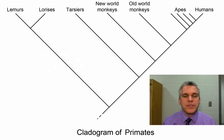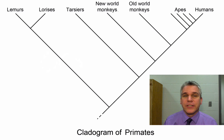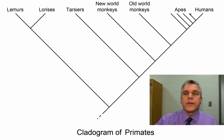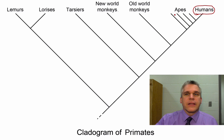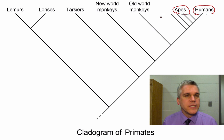There are different types of cladograms that you might potentially see. Here's an example of one using primates. If we were to say what group is most closely related to humans, at least on this cladogram, we would say it's the apes, out of all the different primates we see here.